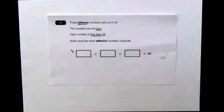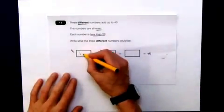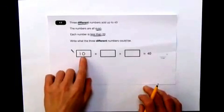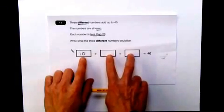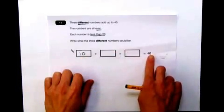Write what the three different numbers could be, and it has to equal 40. Now it's easy to add up in tens, so I'm going to start there. I'm going to say 10. Now indeed, that is less than 20 and it's an even number. So if I've got 10 there, then these two added together have to be 30 in total to give me my 40.